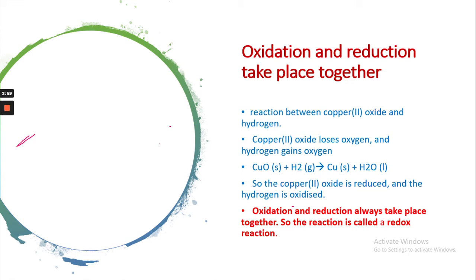Oxidation and reduction take place together. Look again at the reaction between copper oxide and hydrogen. Copper oxide loses oxygen and hydrogen gains oxygen. Here copper oxide converts into copper, so it is reduced into copper, and hydrogen is oxidized into water.